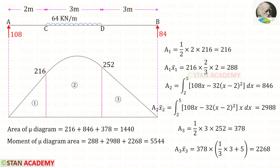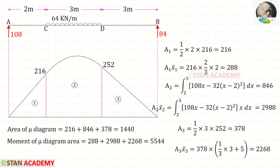Now let us find the total area of the Mu diagram by adding the three values. After adding, we get 5540. Now let us find the moment of the Mu diagram area by adding the three moment values. After adding, we get 5544.